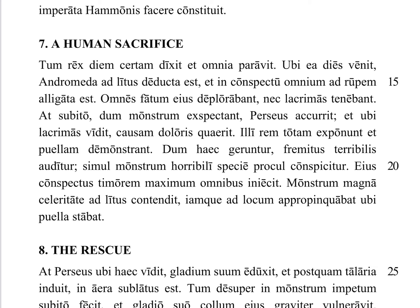Going on: Et ubi lacrimas vidit — and when he saw their tears, this is Perseus — causam doloris quaerit: he seeks the cause of their pain. They expound the whole affair and they show the girl. Dum haec geruntur — while these things are being done — fremitus terribilis: a terrible roar. Fremitus is a verbal noun referring to a kind of deep, throaty noise such as a bear or lion or really big monster might make — a roar or growl.